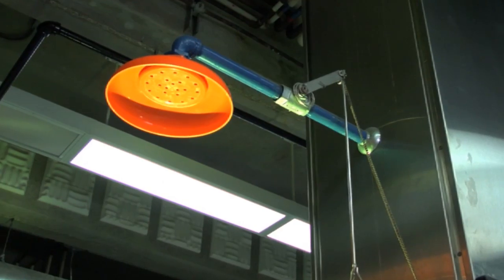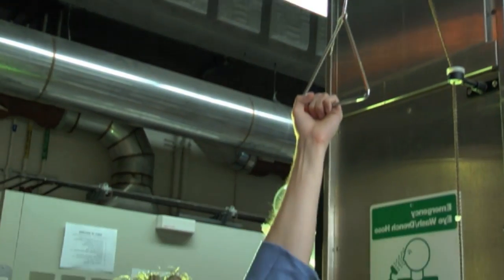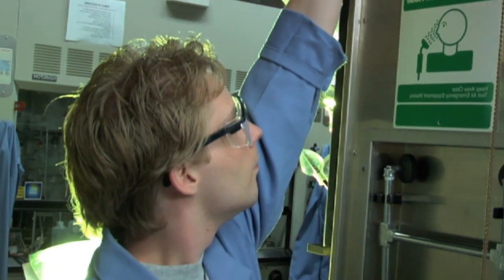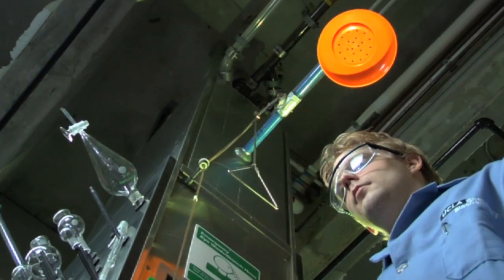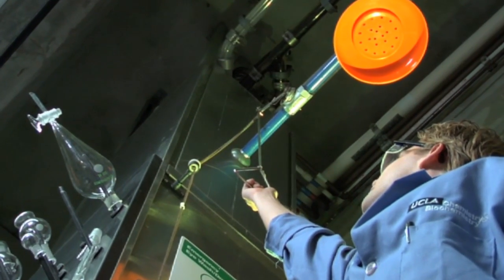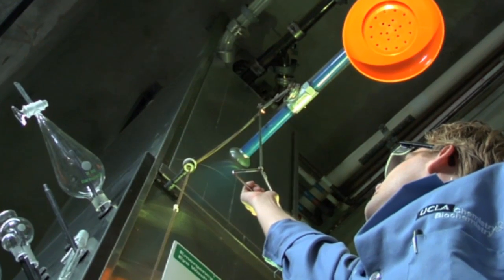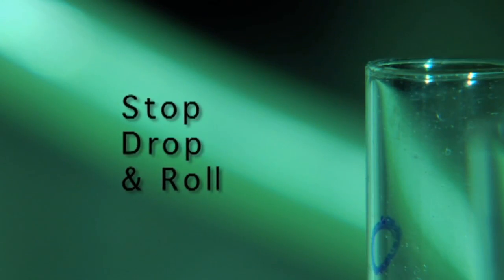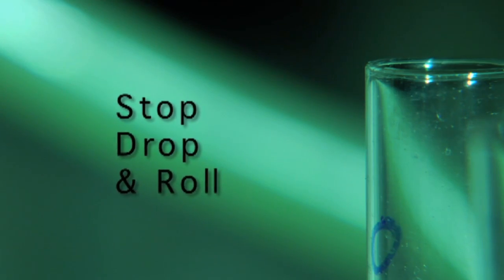If your lab coat catches fire, immediately remove it and use the emergency shower to douse the flames. Use the shower long enough to remove any contaminating material and cool the skin and body. This minimizes damages caused by burns. If a shower is not available, then stop, drop, and roll.